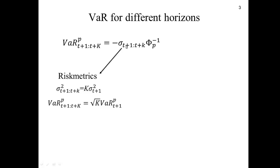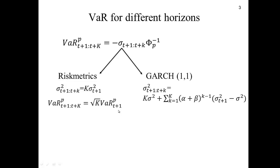Under RiskMetrics, sigma from t+1 to t+k is just k times the one-day variance. Hence the Value at Risk over the t+1 to t+k period is equal to the square root of the number of days times the one-day Value at Risk.